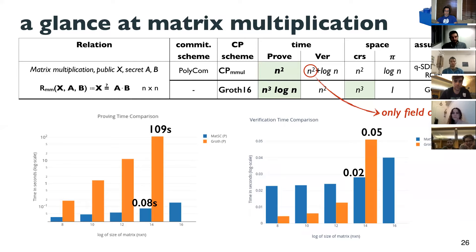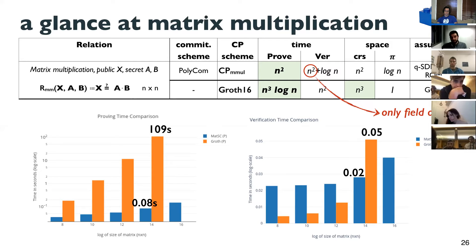Let me make the case for matrix multiplication efficiency. With our matrix multiplication scheme, the proving time is order n-squared for n-by-n matrices — optimal in the sense that it's linear in the length of the inputs of the relation. This is in contrast to the cubic proving time you'd get with any circuit-based approach, such as encoding the matrix multiplication with an R1CS general-purpose constraint system like Groth16.